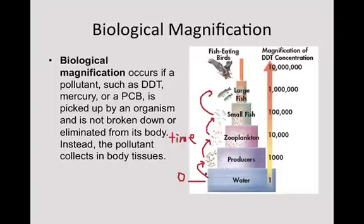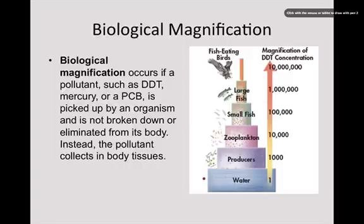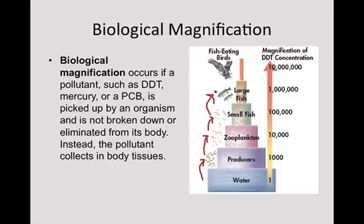This is a food chain: water to producers, producers to zooplankton, zooplankton to small fish, small fish to large fish, and large fish to birds. As we go up that food chain, we go from low concentration to high concentration.